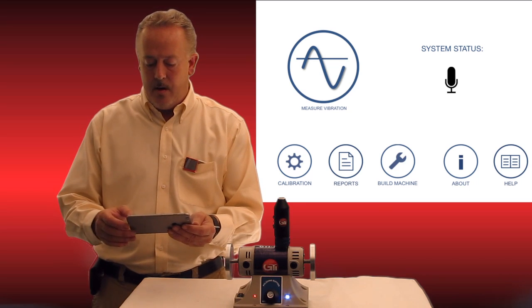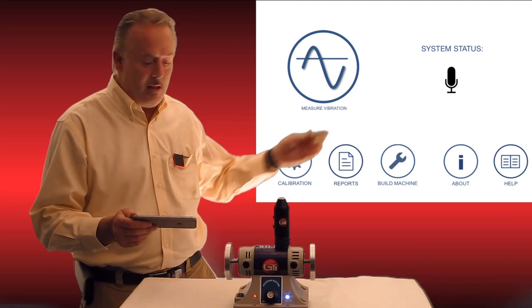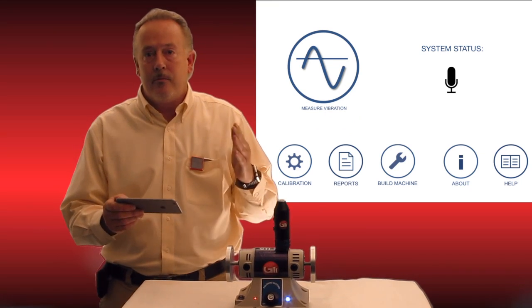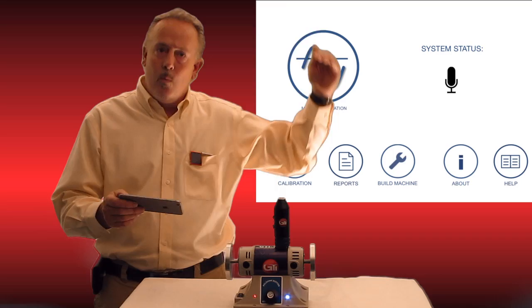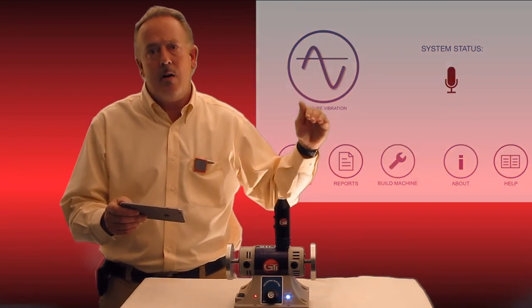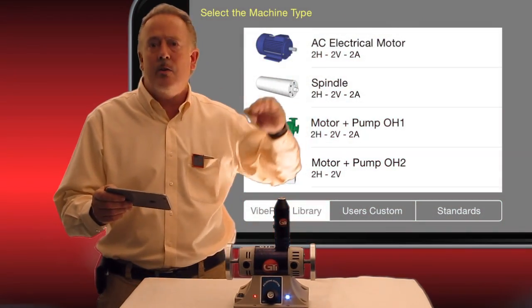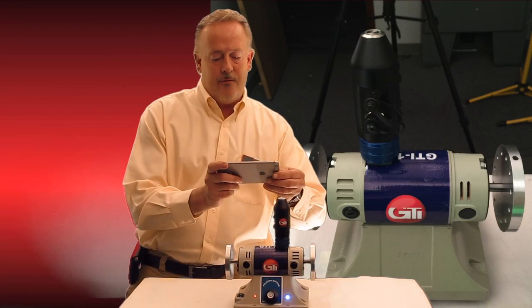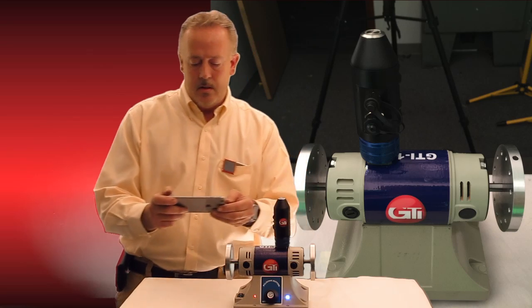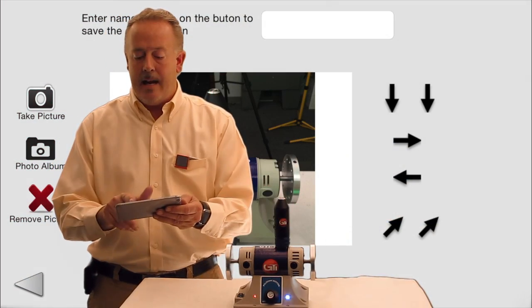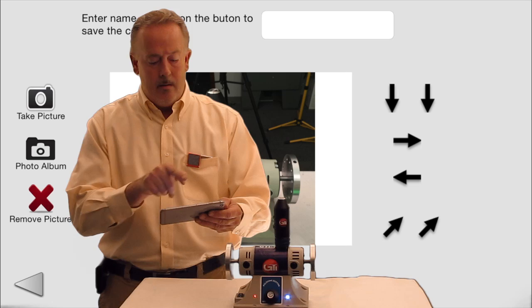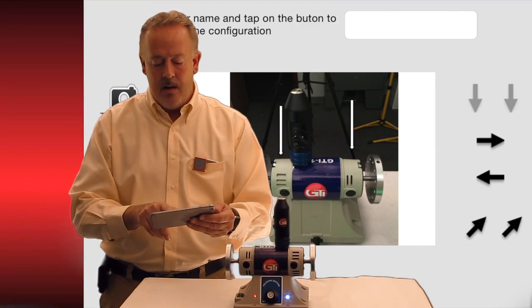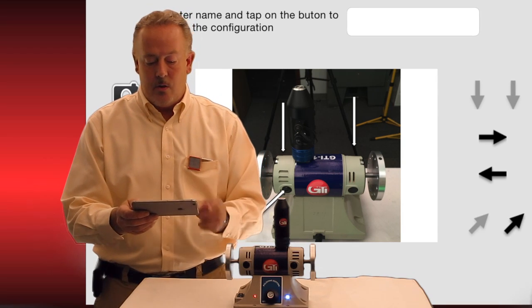So as I opened Vibe RMS here, you can see a beautiful layout. And one of the first buttons on the bottom is you can actually build a machine. So if you don't have one of the machines that we've already picked in our hierarchy of motor, pump, fan, or combination, you can actually, just as I'm going to do here, take a photo of this motor, hit the use photo button, and you're able to lay out all your different points of V1 and H1 right on the motor and move those around and size them up.